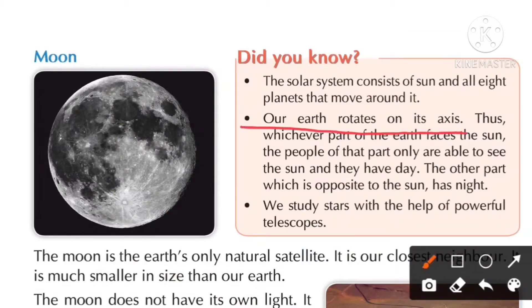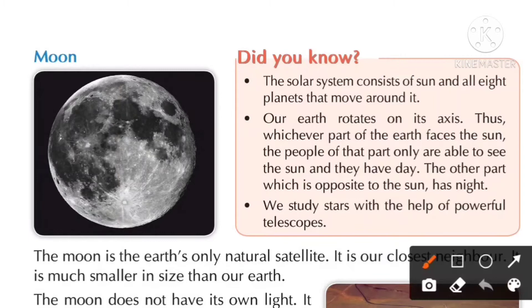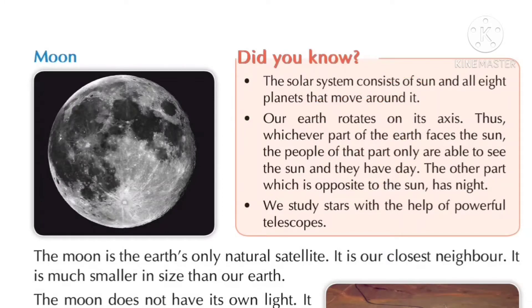Our earth rotates on its axis. Suppose this is earth — it rotates on its axis. And this is the moon. The moon also rotates on its axis.